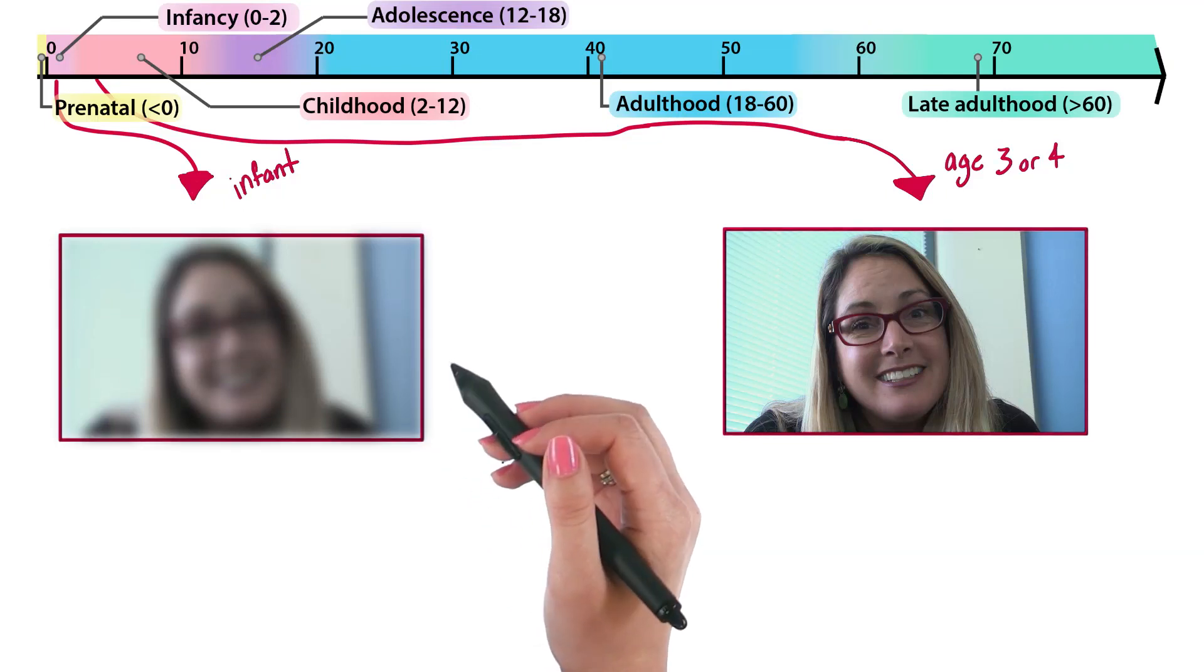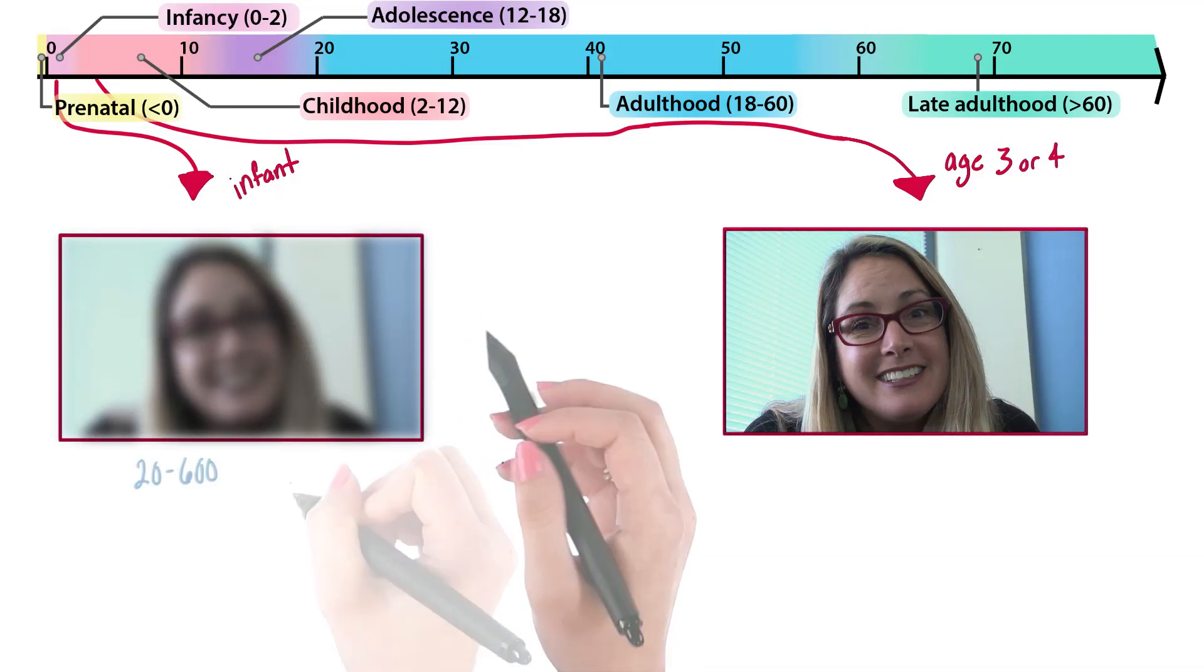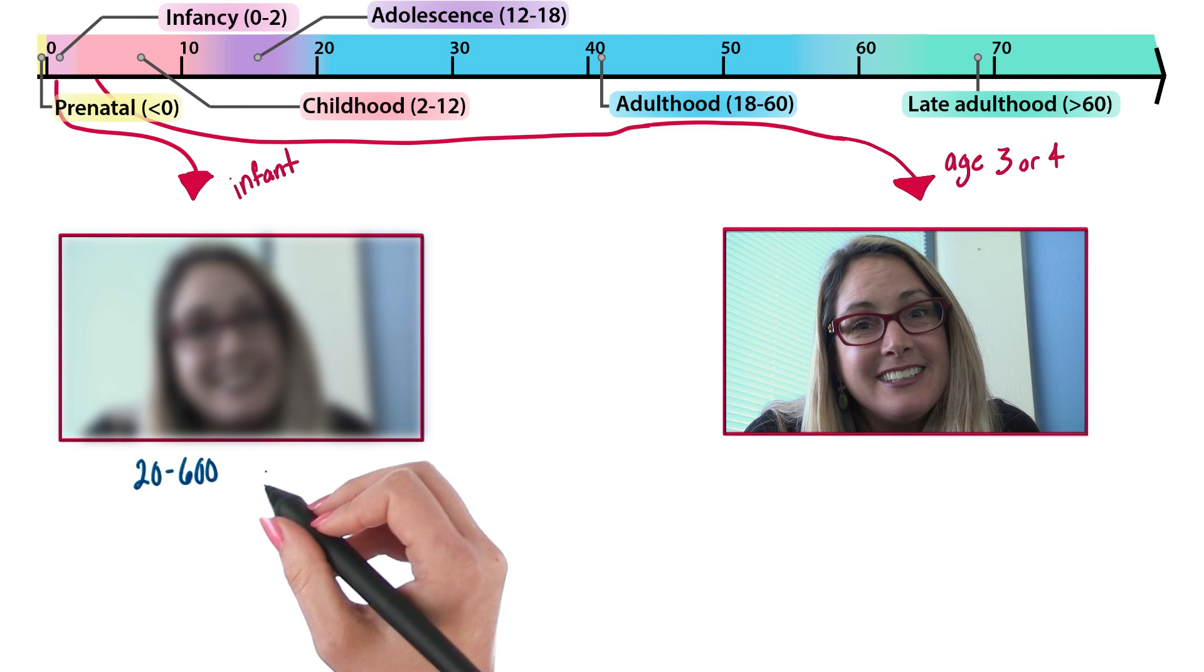On the other hand, our vision still has a lot of developing to do after we're born. A newborn can only see at about 26/60, which isn't great at all, considering that 20/20 is perfect vision. Objects need to be really close to a baby for them to be able to see it.